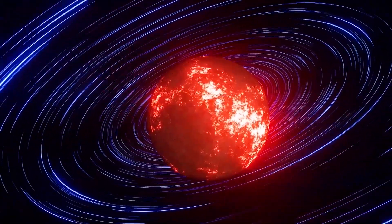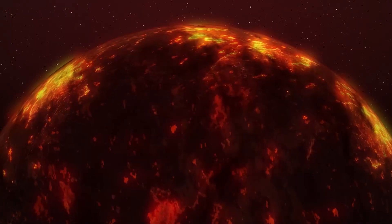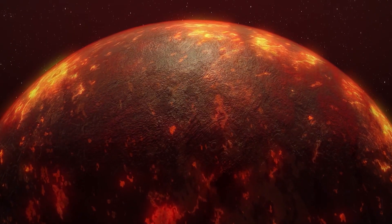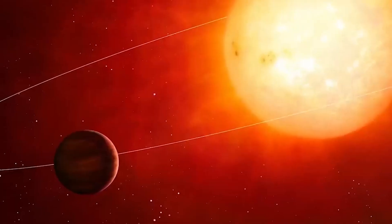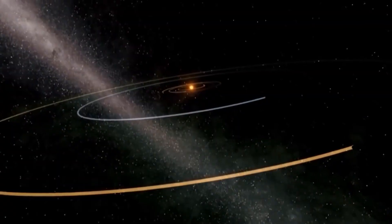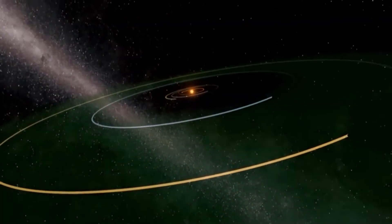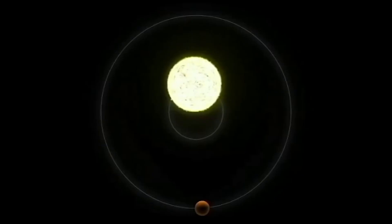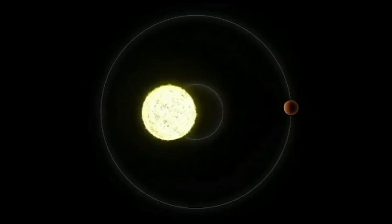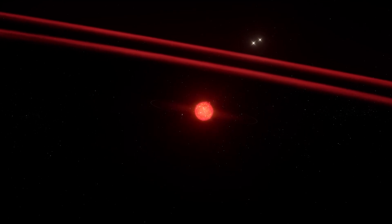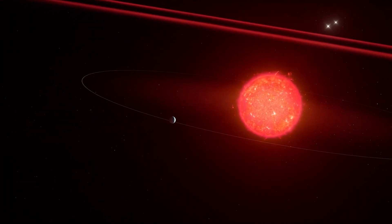But what sets TOI-5205b apart from the rest is its size. Its discovery has challenged the notion that small stars can host giant planets. Astronomers have found a few gas giant planets orbiting older M dwarf stars, but TOI-5205b is the first gas giant around a low-mass M dwarf star. Its existence challenges our current understanding of planet formation.